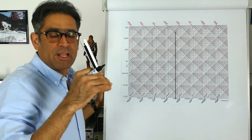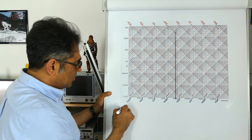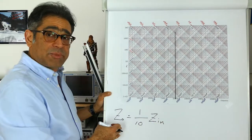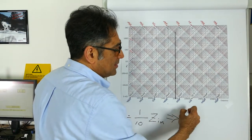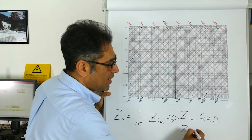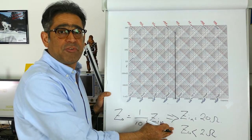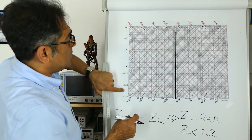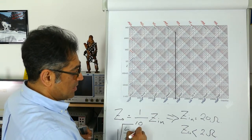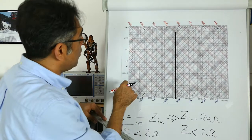Let us assume that Z out of the filter has to be one tenth of Z in of the power supply. If I assume that Z in is equal to 20 ohms, then Z out — in order to not violate Middlebrook — has to be smaller than 2 ohms. The equations for this are very simple and they're in a different video that we already recorded. Now if I look at this, I know that the impedance of the filter, which is the square root of L over C, has to be smaller than 2 ohms. So I find the 2-ohm line and draw it.